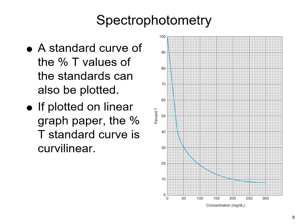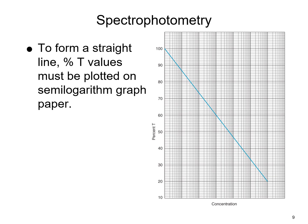A standard curve can also be plotted using percent transmittance values. However, if plotted on linear graph paper, the percent transmittance standard curve will be curvilinear. To form a straight line, the percent transmittance values must be plotted on semilogarithmic graph paper. Since special graph papers are required, this approach is not commonly used.